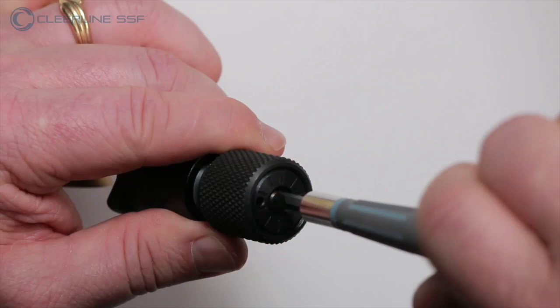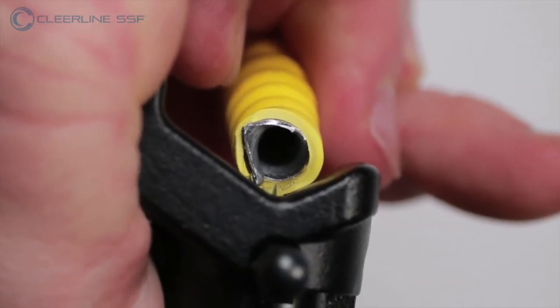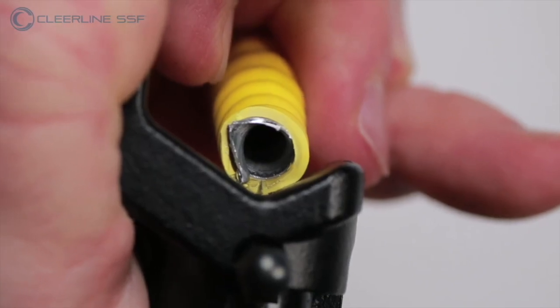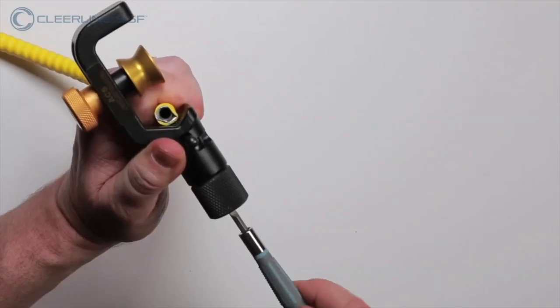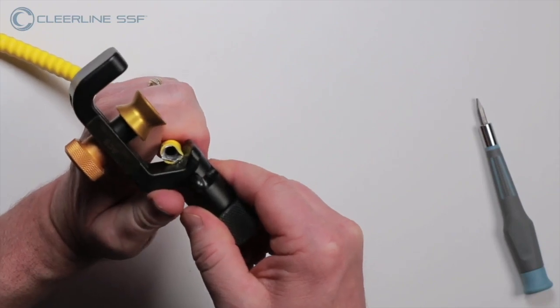Loosen the allen screw and adjust the blade height by turning the flathead screw located on the base of the slitting tool so it approximates no more than the thickness of the cable jacketing. Avoid setting the blade too high and then tighten the allen screw to secure the blade.